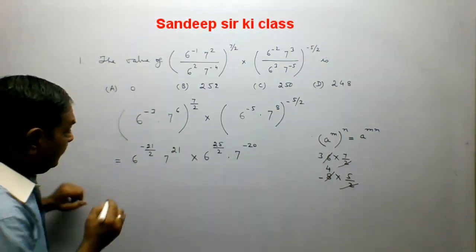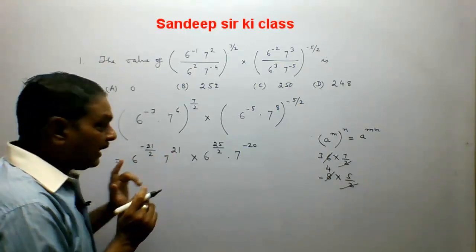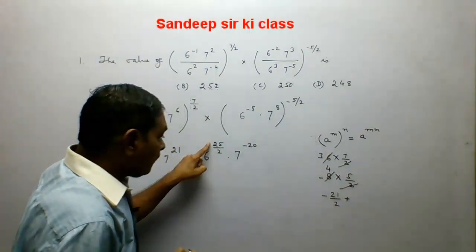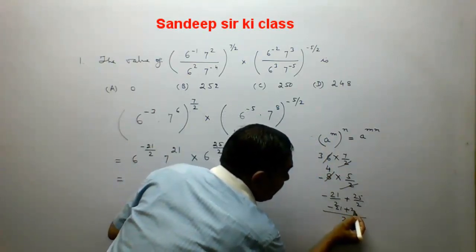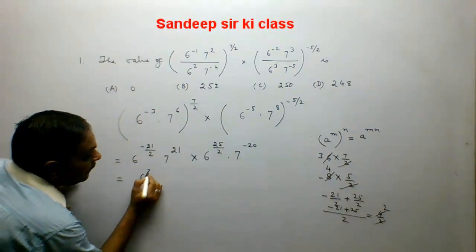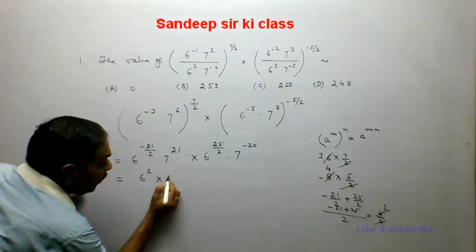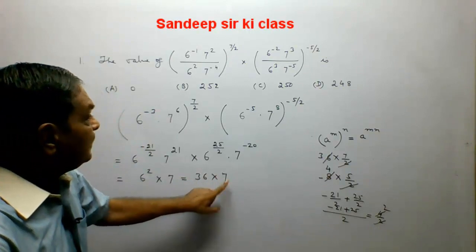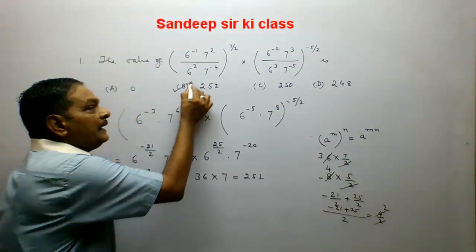In multiplication, if the base is same, powers are added. For base 6: minus 21 upon 2 plus 25 upon 2 — LCM is 2, so minus 21 plus 25 equals 4 upon 2, that is 2. So 6 has power 2. For base 7: 21 plus minus 20 gives power 1, that is 7. So 6 to the power 2 is 36, and 7 comes as it is, giving 252. Hence option B is correct.